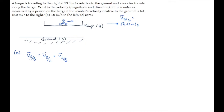On the left, the subscripts are scooter relative to barge. On the right, the first and last subscripts match those on the left — scooter and barge — and the middle subscripts have to equal each other. So the velocity of the scooter relative to the barge equals the velocity of the scooter relative to the ground plus the velocity of the ground relative to the barge. In the problem, we're told the velocity of the barge relative to the ground, and that is the negative of the last term on the right, so we can rewrite like this.